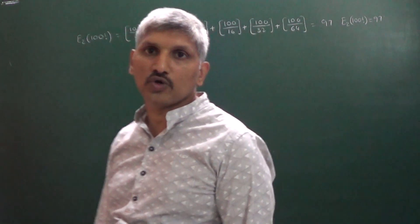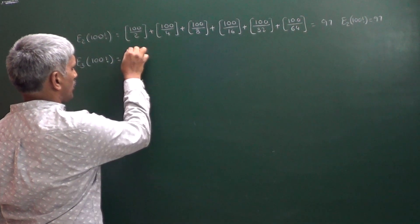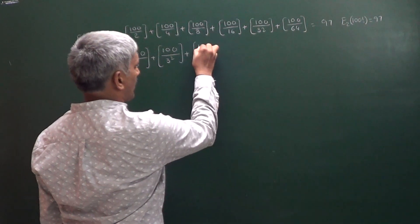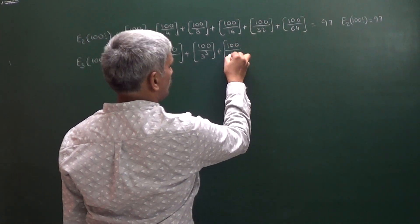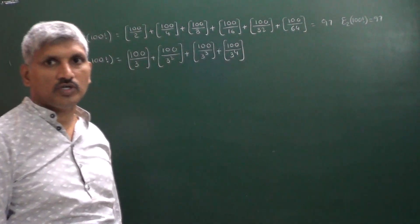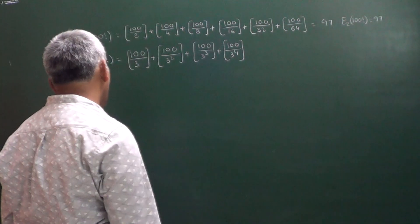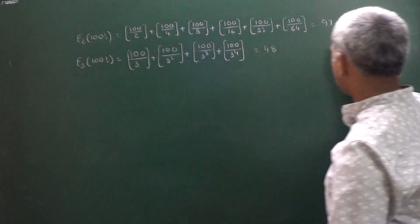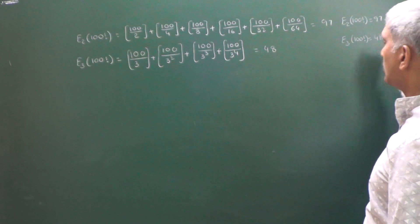In a similar way, to find the exponent of 3 in 100 factorial: floor(100/3) + floor(100/9) + floor(100/27) + floor(100/81). The next term would be floor(100/243), which gives 0. Summing up these values, the exponent of 3 in 100 factorial is equal to 48.